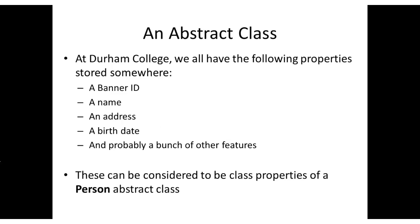As a more close-to-home example, here at Durham we're all in a system called Banner, and we all have a Banner ID — that 9-digit number, sometimes called your student number. We're all associated with a Banner ID, and they have a name, an address, and a birth date for each of us, and probably a lot of other things. These could be considered class properties of an abstract class called Person.